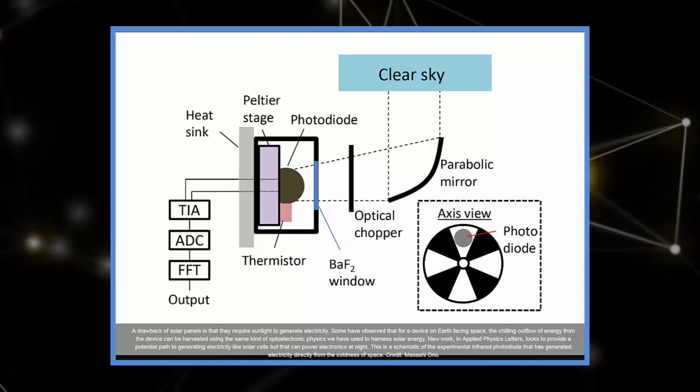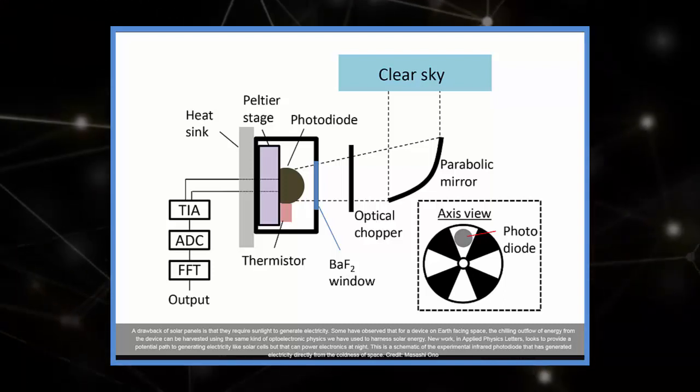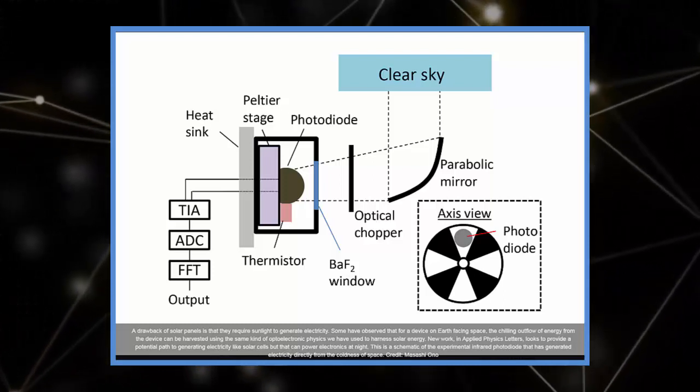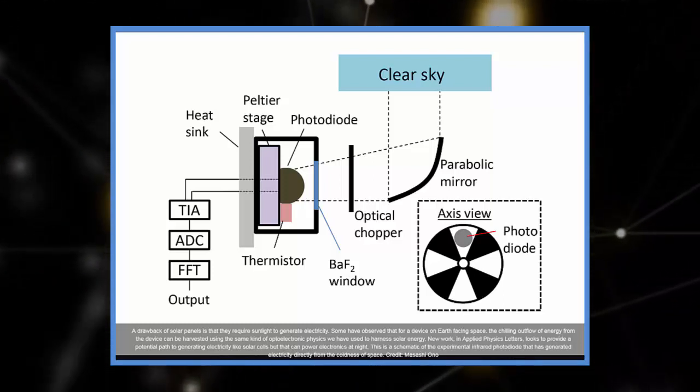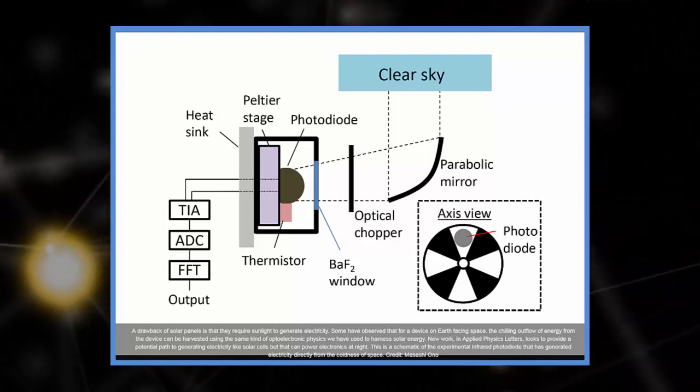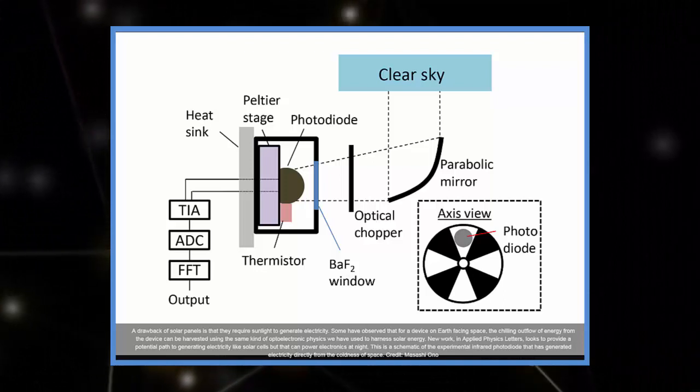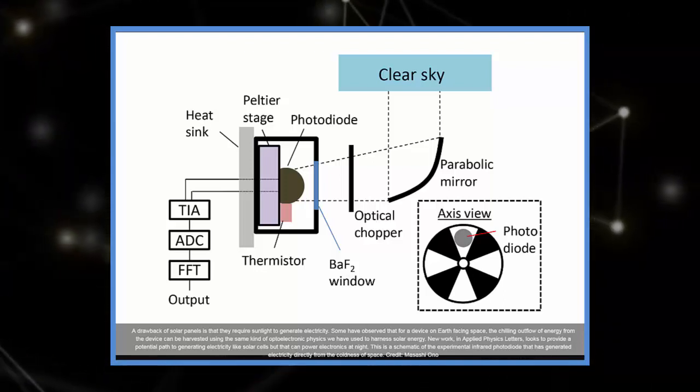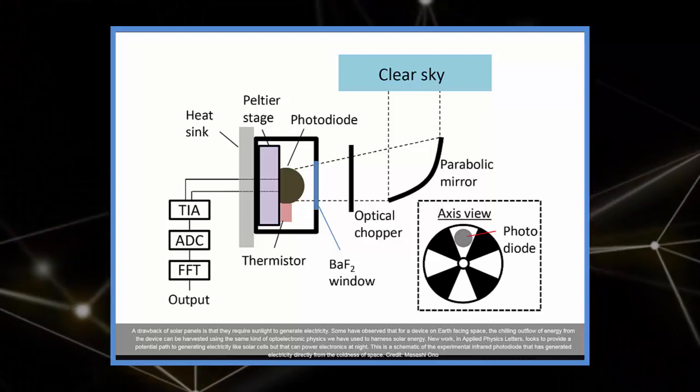The amount of power that we can generate with this experiment, at the moment, is far below what the theoretical limit is, said Musashi Ono, another author on the paper. The group found that their negative illumination diode generated about 64 nanowatts per square meter, a tiny amount of electricity, but an important proof of concept that the authors can improve on by enhancing the quantum optoelectronic properties of the materials they use.